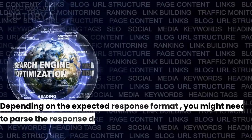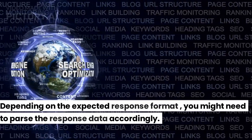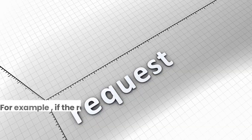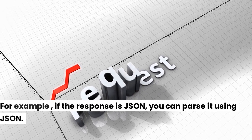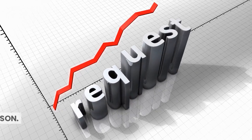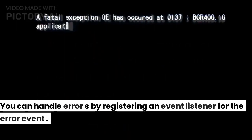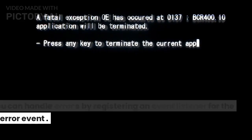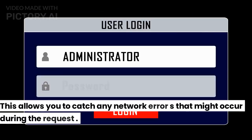Depending on the expected response format, you might need to parse the response data accordingly. For example, if the response is JSON, you can parse it using JSON.parse(). You can handle errors by registering an event listener for the error event. This allows you to catch any network errors that might occur during the request.